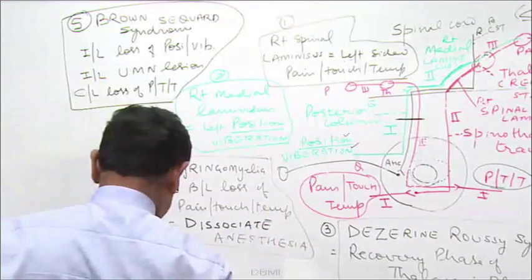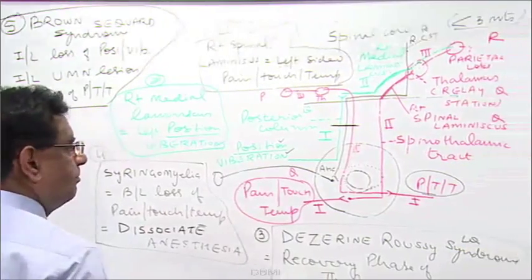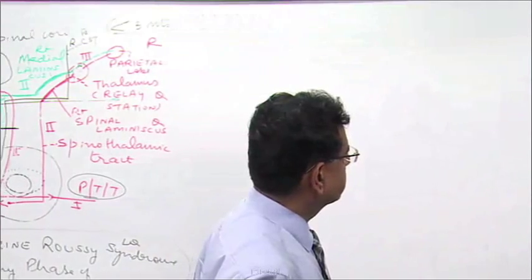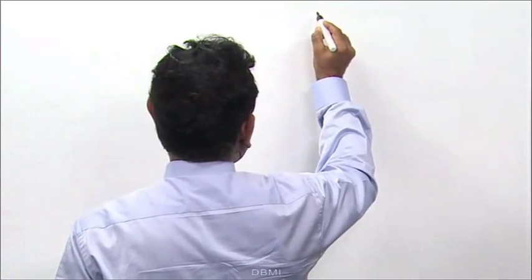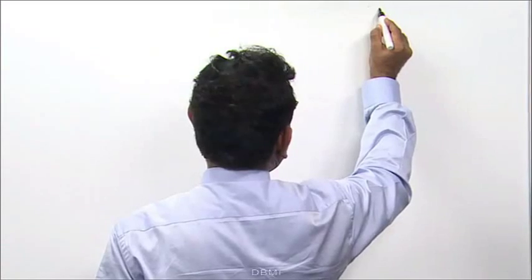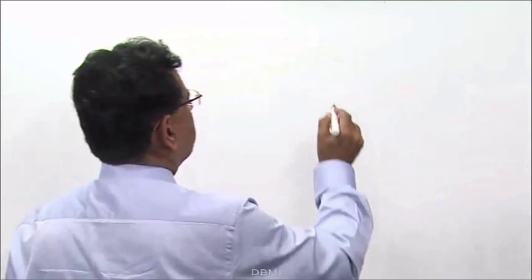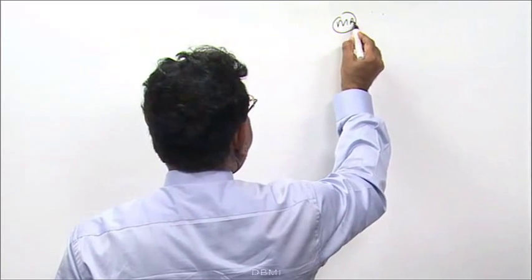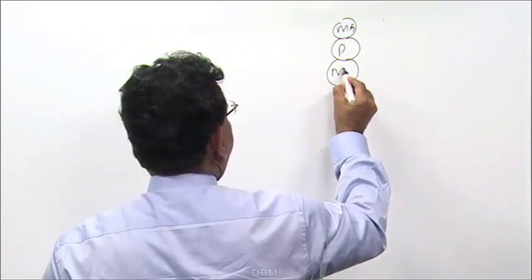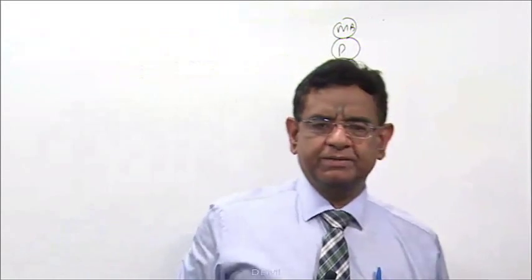Now we move on to medulla oblongata. As we move upward in the spinal cord, comes the medulla oblongata. Before I discuss the medulla oblongata, I should discuss one very basic thing — a brush up of your anatomy knowledge. This is the midbrain, pons, medulla oblongata — so called the brain stem.